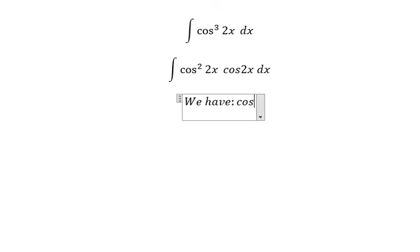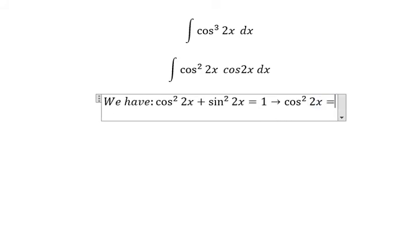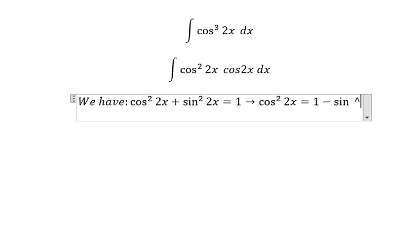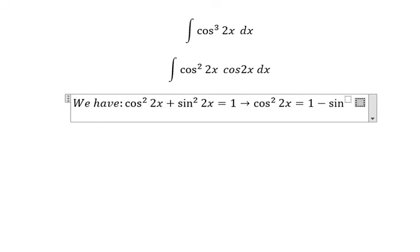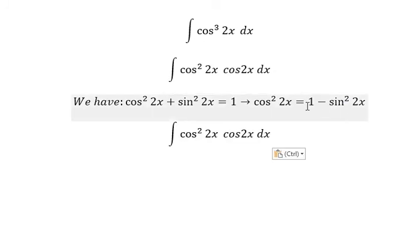That's about cosine squared 2x plus sine squared 2x equals to number one. That means we have cosine squared 2x equals to one minus sine squared 2x. So this one in here we change for this one.